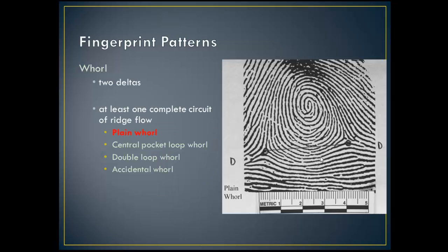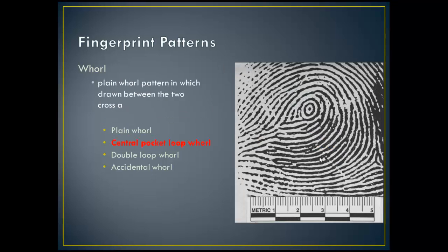Whorls are fingerprint patterns in which some of the ridges make a turn through at least one circuit, and they contain at least two deltas. In plain whorls, the circuit of ridge flow is between two deltas, and if an imaginary line is drawn between the two deltas, the recurving ridge flow would contact that imaginary line. A central pocket loop whorl consists of at least one recurving ridge or an obstruction with two deltas. When the imaginary line is drawn, no recurving ridge within the pattern area touches the line. Central pocket loop whorl ridges make one complete circuit, which may be spiral, oval, circular, or any variant of a circle.